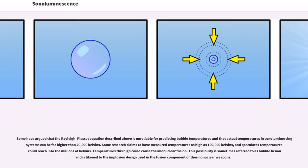Some have argued that the Rayleigh-Plesset equation described above is unreliable for predicting bubble temperatures and that actual temperatures in sonoluminescing systems can be far higher than 20,000 kelvins. Some research claims to have measured temperatures as high as 100,000 kelvins, and speculates temperatures could reach into the millions of kelvins. Temperatures this high could cause thermonuclear fusion. This possibility is sometimes referred to as bubble fusion and is likened to the implosion design used in the fusion component of thermonuclear weapons.